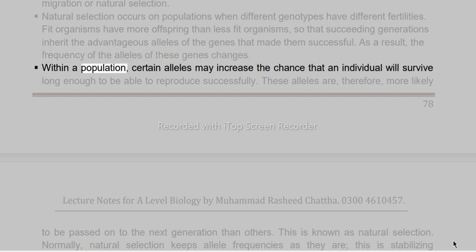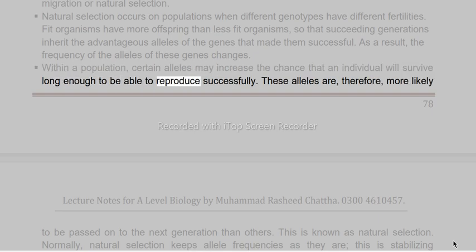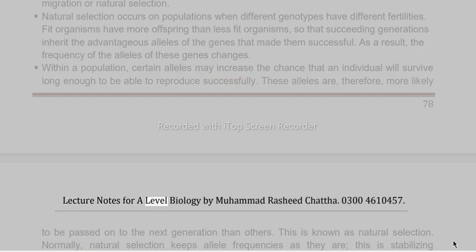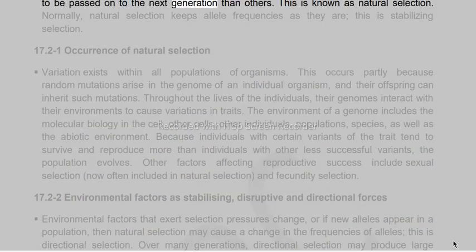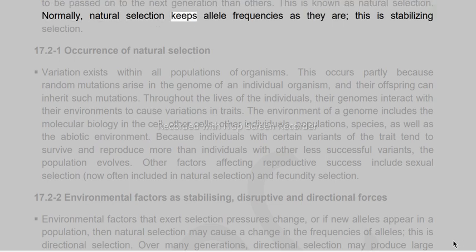Within a population, certain alleles may increase the chance that an individual will survive long enough to reproduce successfully. These alleles are therefore more likely to be passed on to the next generation than others. This is known as natural selection. Normally, natural selection keeps allele frequencies as they are — this is stabilizing selection.